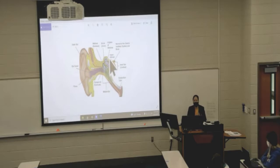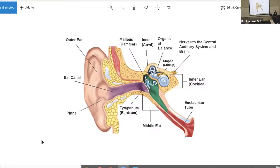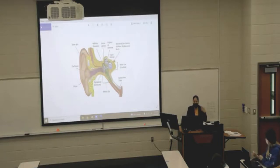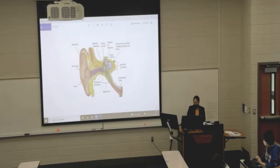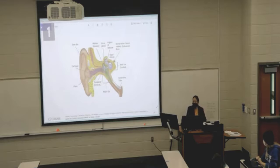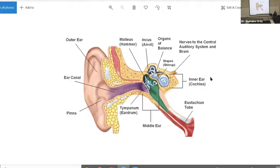A fun fact: damage to the ear tends to occur in the middle ear. I actually knew someone who was hit in the ear during an altercation and lost their hearing because their middle ear was essentially destroyed. So now let's move toward the inner ear.